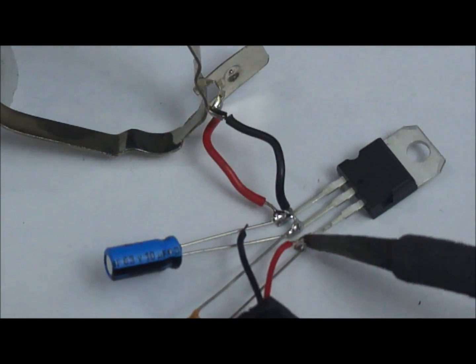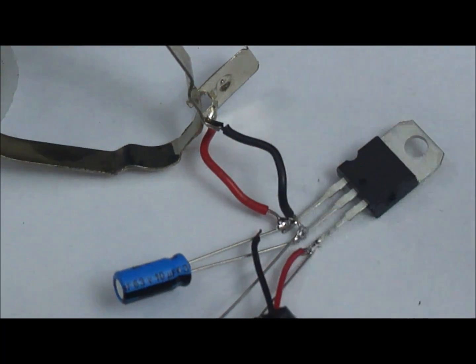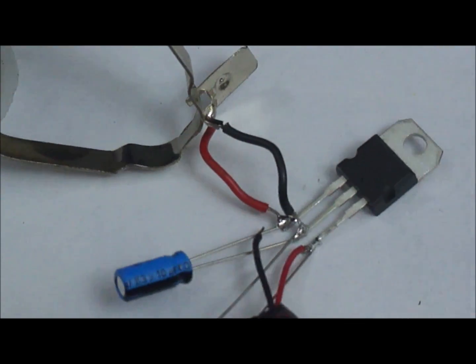We connect the red wire of the charger cable to the third pin and the black wire to the second pin of the 7805.